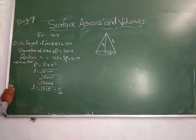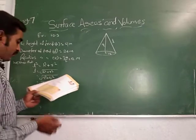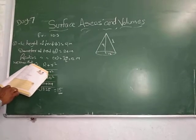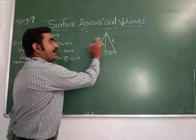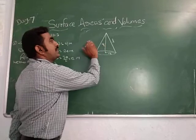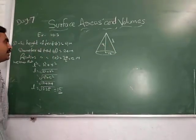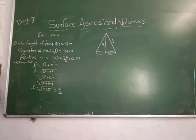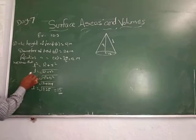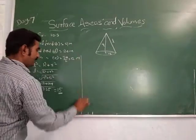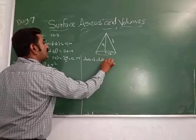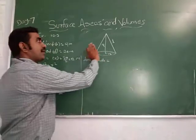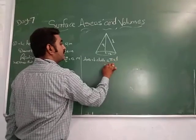Now what is asked: find the cost of canvas cloth required at 14 rupees per square meter. Canvas cloth means we have to find the curved surface area of the tent. Area of cloth equals curved surface area of the tent, that is pi R L. Substituting: 22 by 7 into R, what is radius, 12, into slant height, 15. This is the curved surface area.